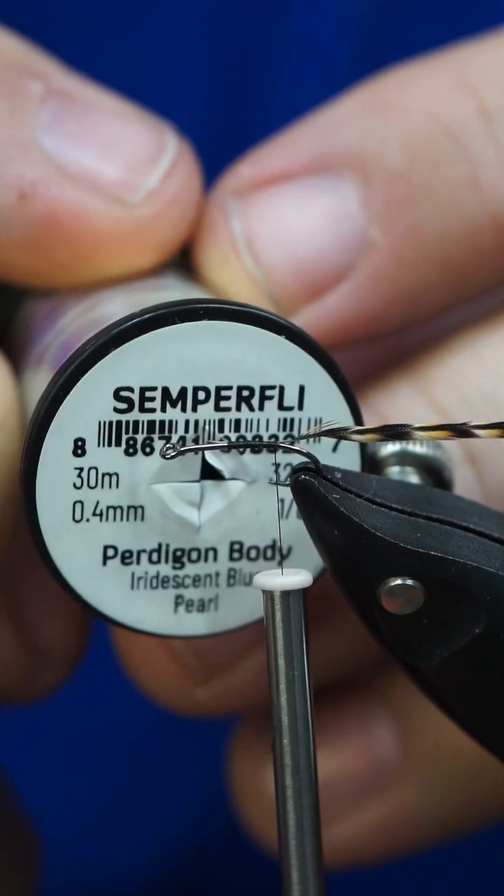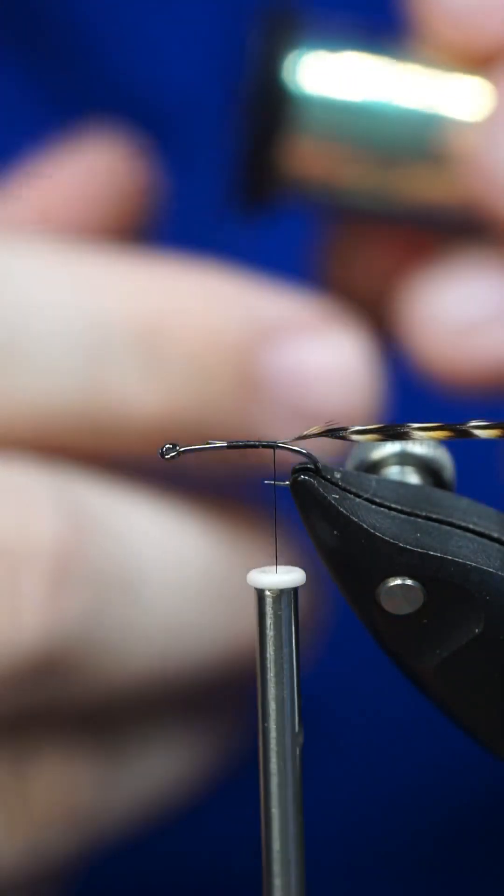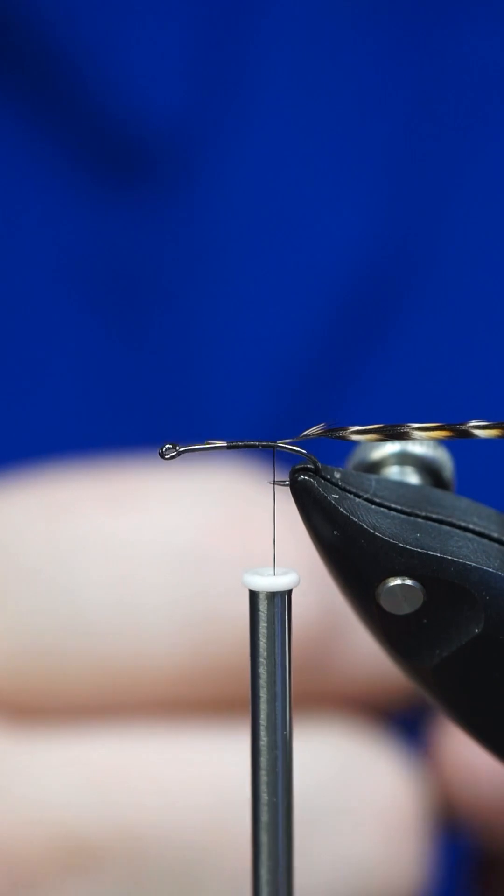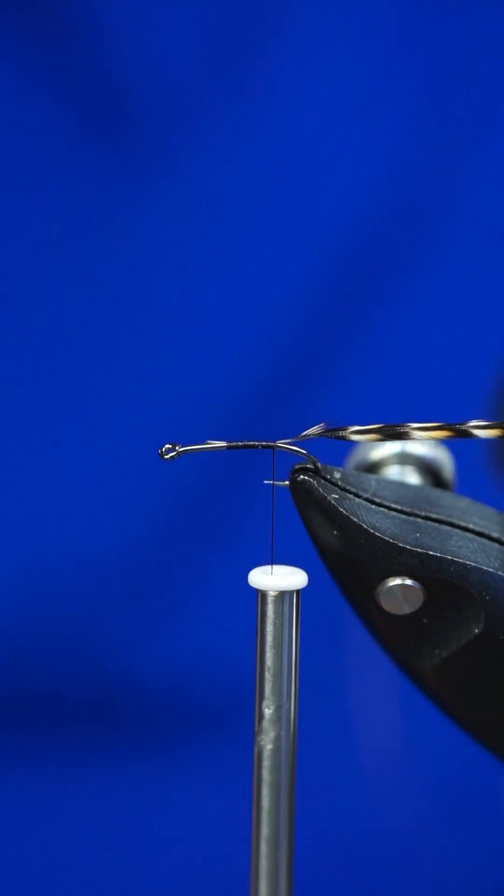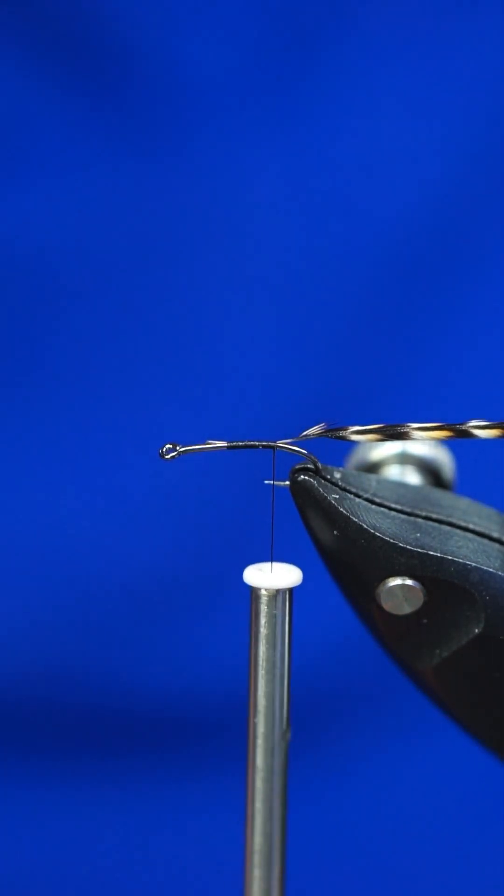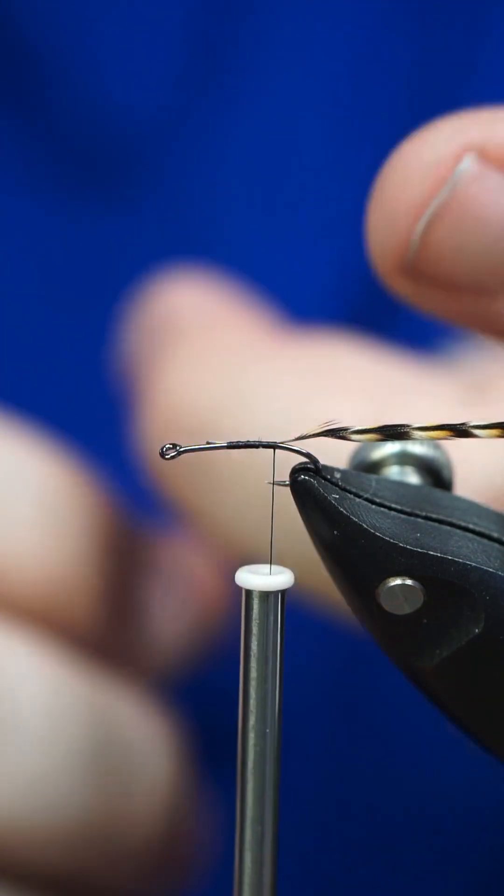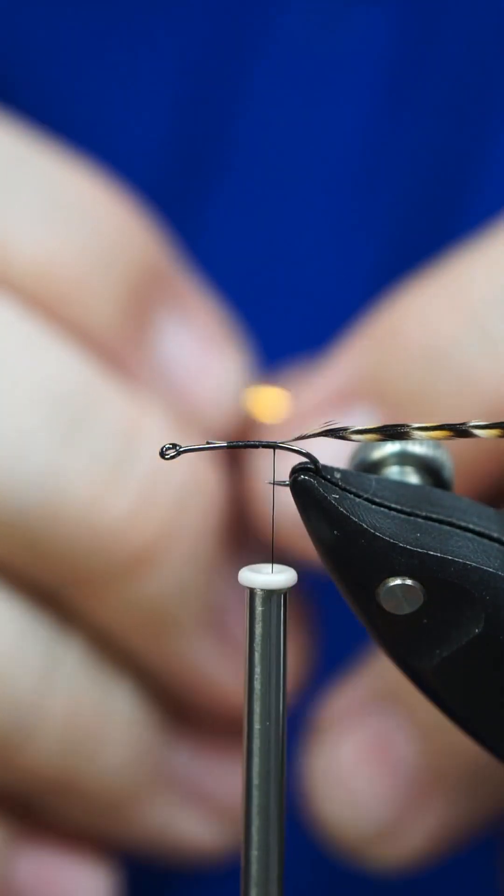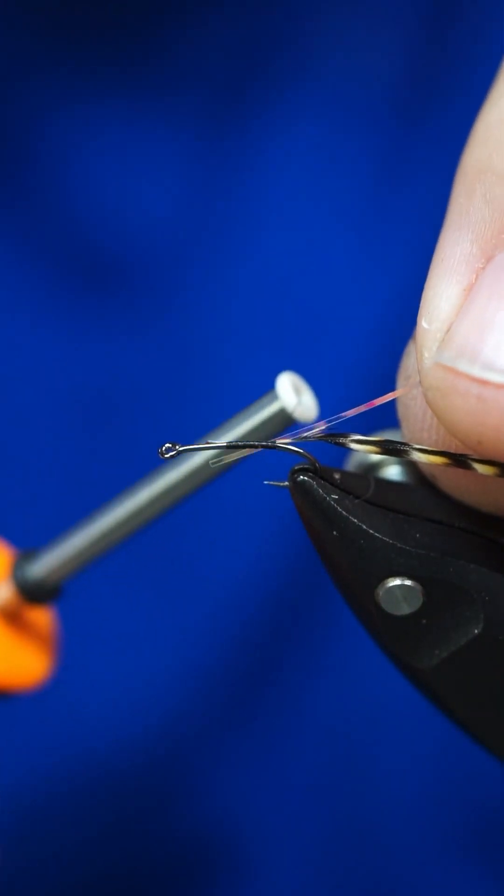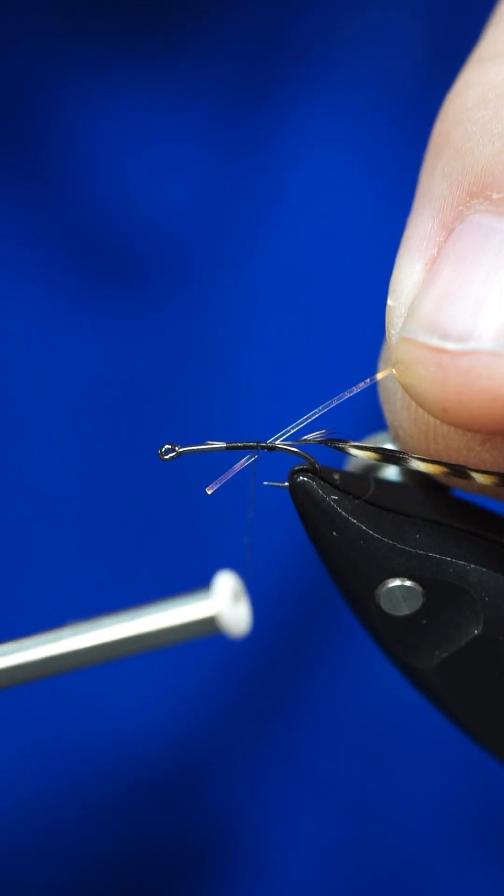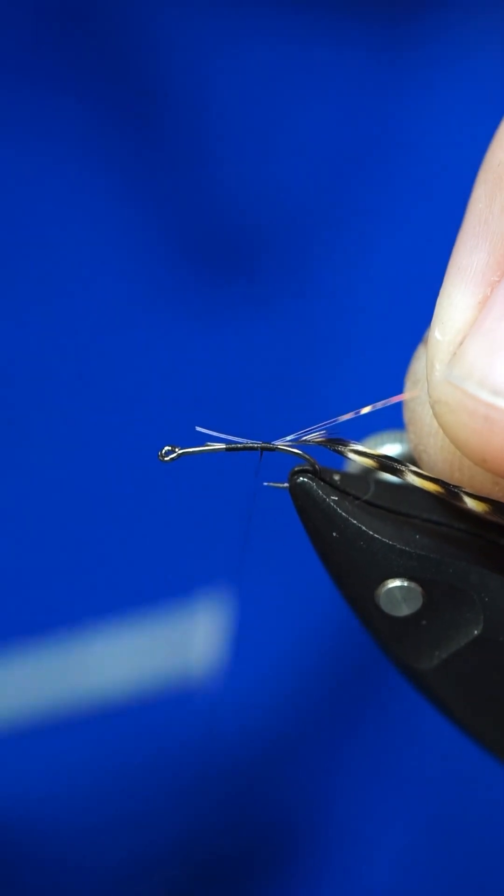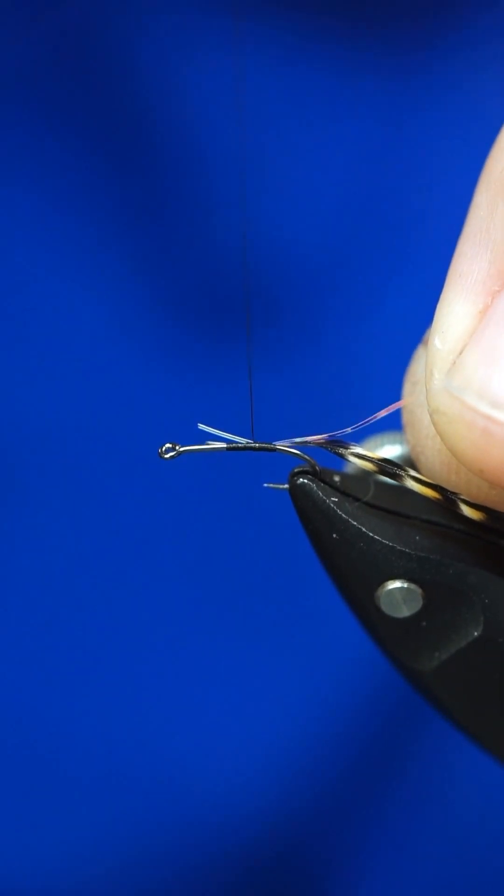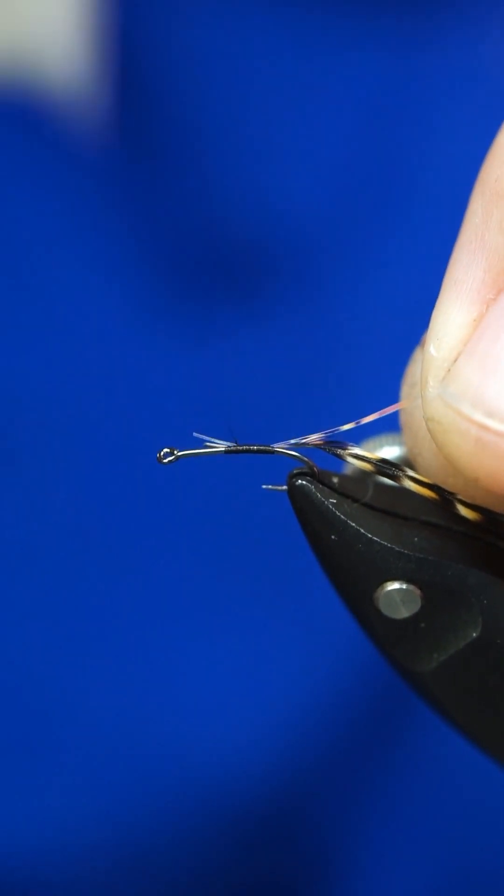Then we're going to grab some Peritagon body here in iridescent blue and pearl. It doesn't take much of this, just a little bit. The FW 531s are a little bit bigger than a traditional size 18, so for like a normal hook it'd probably be about a size 16.